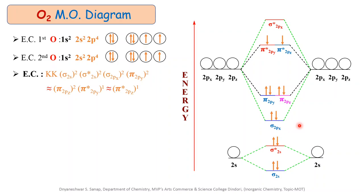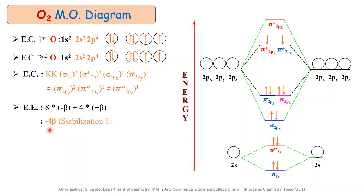The next important point is calculation of the energy involved during the formation of the O2 molecule. Energy is calculated using the formula: (number of electrons in bonding MOs × −β) + (number of electrons in antibonding MOs × +β). We have 8 electrons in bonding MOs and 4 electrons in antibonding MOs. Substituting: (8 × −β) + (4 × +β) = −4β as the stabilization energy. This means there is evolution of energy during the formation of the O2 molecule.